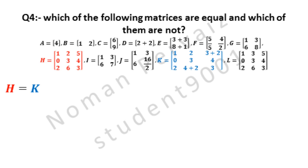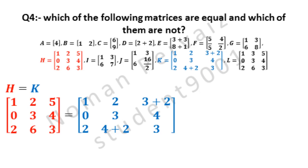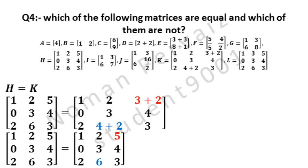The value of matrix H is 1, 2, 5, 0, 3, 4, 2, 6 and 3 as represented by red color. And the value of matrix K is 1, 2, 3 plus 2, 0, 3, 4, 2, 4 plus 2 and 3 as represented by blue color. 3 plus 2 becomes 5 and 4 plus 2 becomes 6. All remaining terms are written as they are. Since the values of both matrices are same, both are equal.